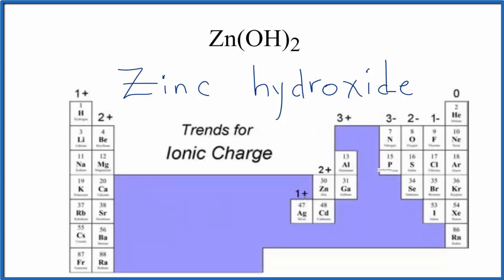The interesting thing about zinc, though, is it's always 2 plus. So we're always going to have zinc as 2 plus. So by convention, we don't write Roman numeral 2 to show that charge on the zinc.